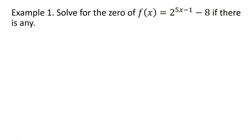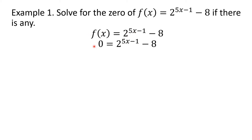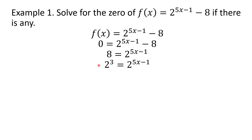Example 1: Solve for the zero of f(x) = 2^(5x−1) − 8, if there is any. We are asked to solve for the zero or the x-intercept. The first step is to set f(x) equal to zero. So we have 0 = 2^(5x−1) − 8. Using APE, we add positive 8 to both sides, getting 8 = 2^(5x−1). Since x acts as an exponent, we express 8 in terms of base 2. Since 8 = 2³, we rewrite this as 2³ = 2^(5x−1).